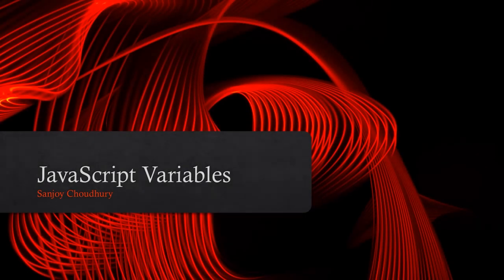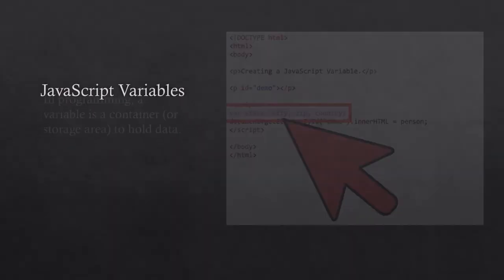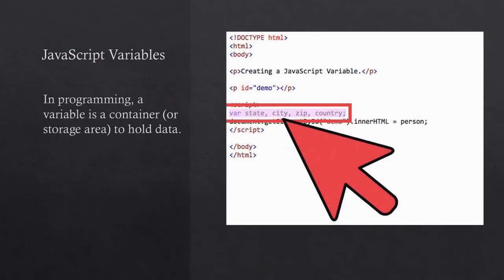Hi, I am Sanjoy and in this video you will learn about JavaScript variables and constants, and also how to initialize and use them with the help of examples. In programming, a variable is a container or storage area to hold data.